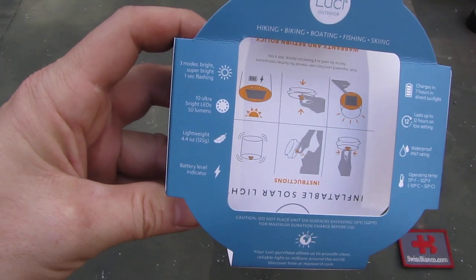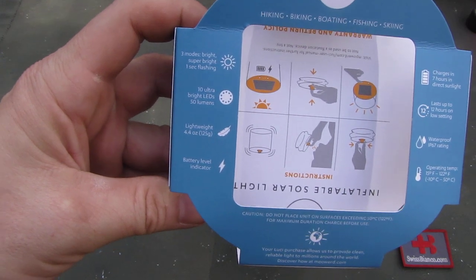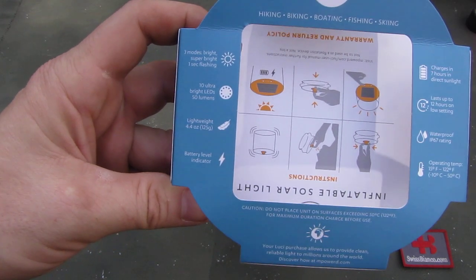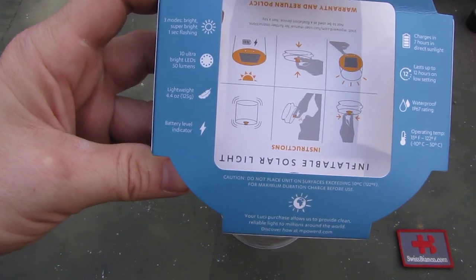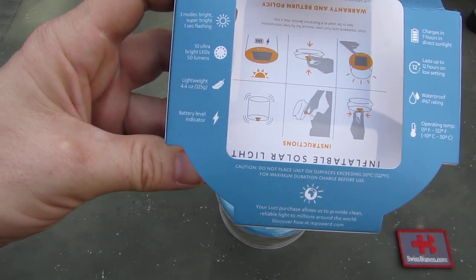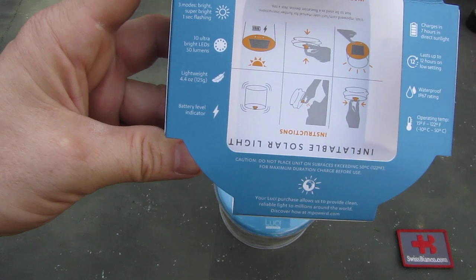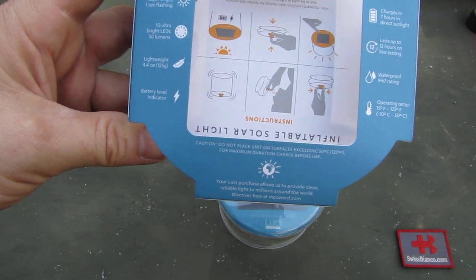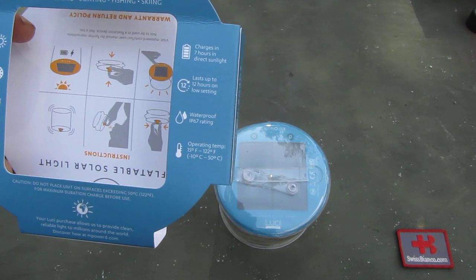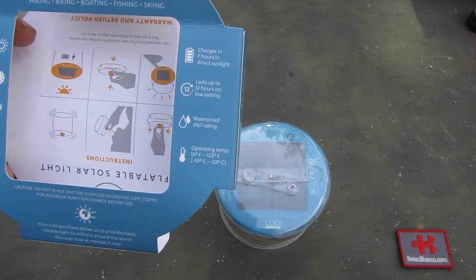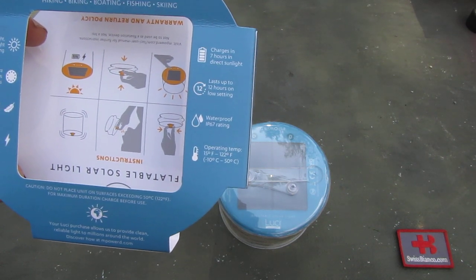Then we have some more information: 10 ultra-bright LEDs, 50 lumens, three modes, and it's light, 125 grams. The battery level indicator, it charges in seven hours in direct sunlight, so that should be enough if you leave it outside during a day.